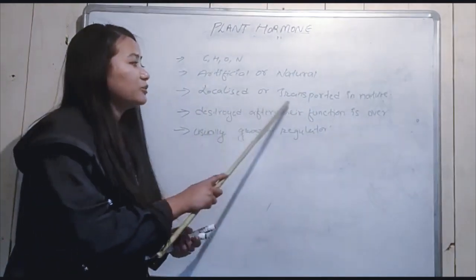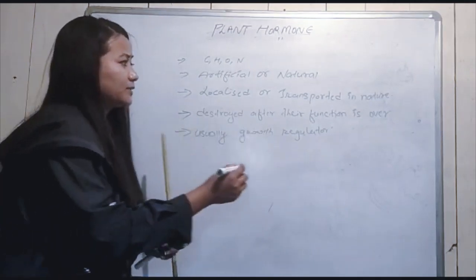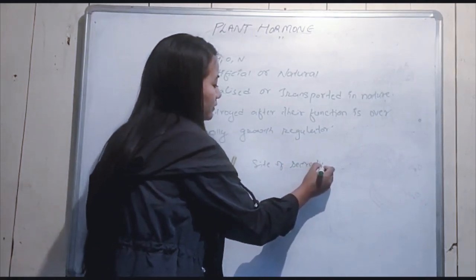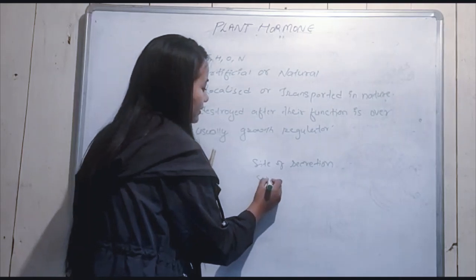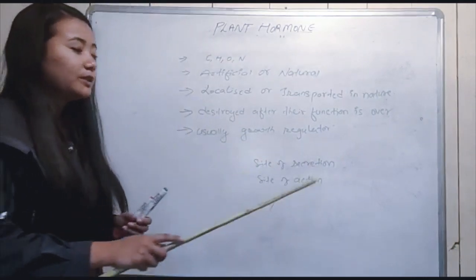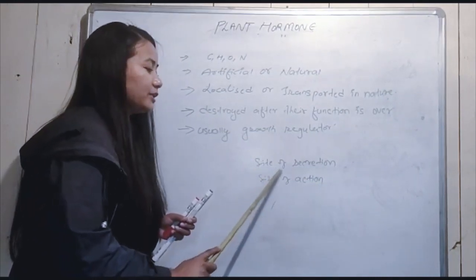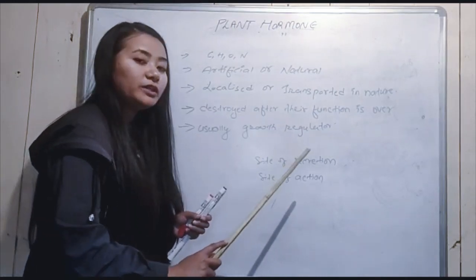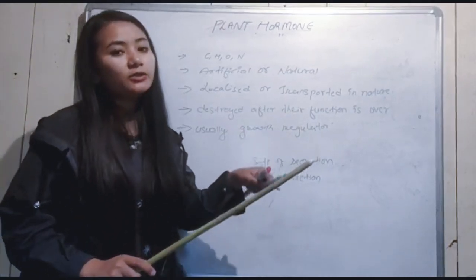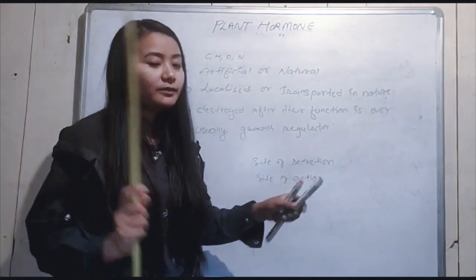The next characteristic: phytohormones are localized or transported in nature. If the site of secretion and the site of action are the same, the hormone is localized. If the site of secretion and the site of action are different, the hormone is transported.